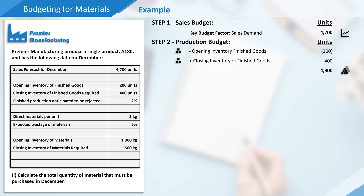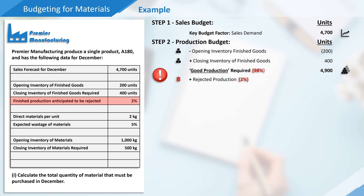So far so good, but there's a problem. The data says that 2% of finished production is anticipated to be rejected, so we need to account for this in our plans. But be careful, as many students make a mistake with this next calculation. We can't simply add 2% to our 4,900 unit subtotal. If 2% of finished production is rejected, this must mean that good production must equal 98% of everything that's produced. Therefore the calculation required is 4,900 units divided by 98% multiplied by 2%, which is 100 units. If we'd added 2% to 4,900 this would have given a figure of 98 units, which wouldn't be enough to account for the anticipated loss.